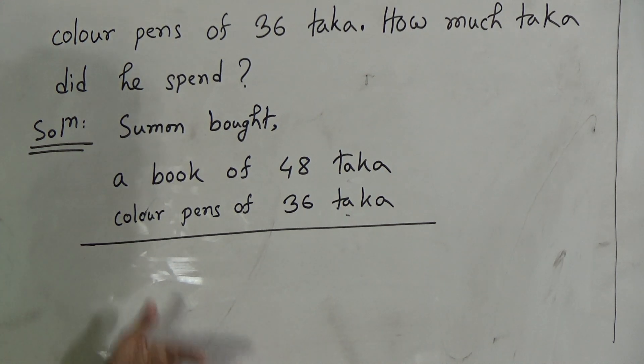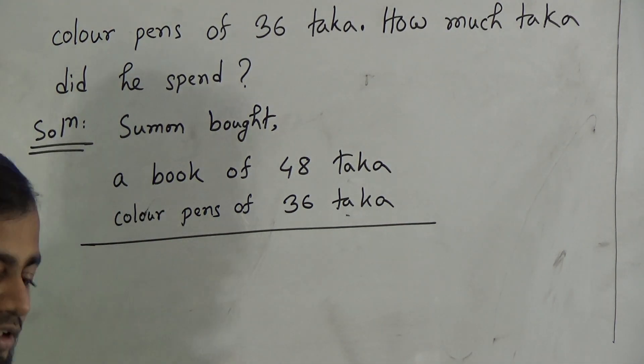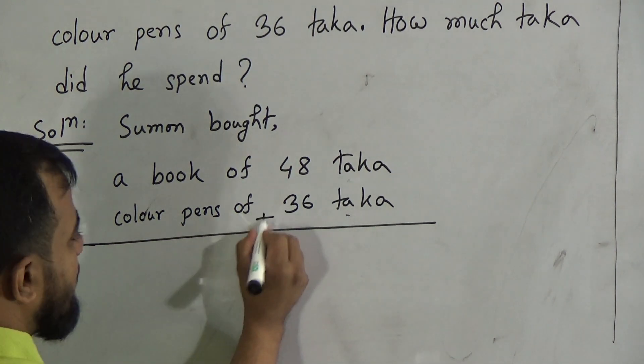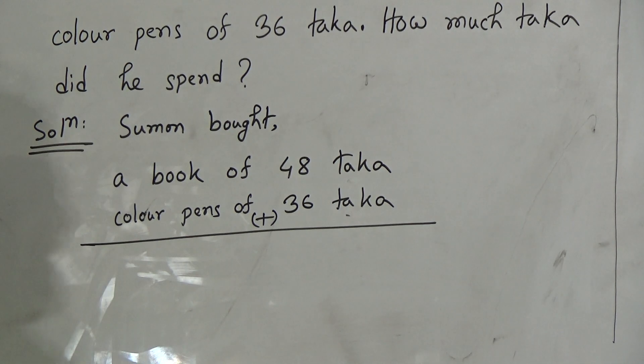In here, the question is, what is the total expenditure? How much taka did he spend? This means what is the total expenditure? That's why we should total it, we should sum it, we should add it. So, the addition sign will be here. And we should add 8 with 6.